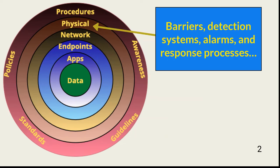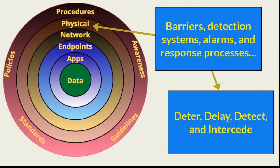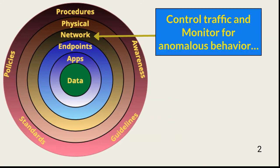The physical layer includes all barrier, detection, and response controls needed to manage physical intrusion by threat actors. The purpose of physical safeguards is to delay intruders until they can be detected and intercepted. In most cases, physical access by an intruder circumvents many, if not most, safeguards surrounding an information resource. Network segments are placed in the physical structures that help protect them from unauthorized physical access.